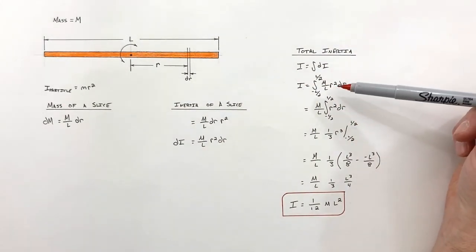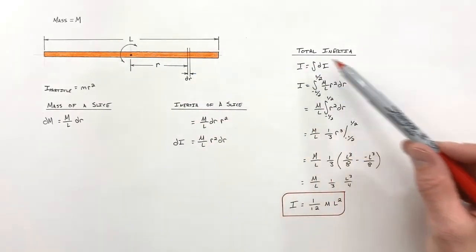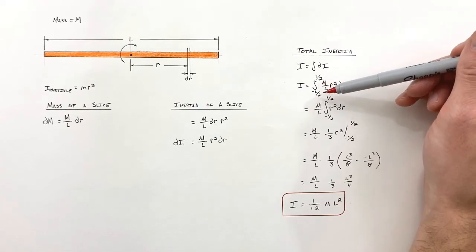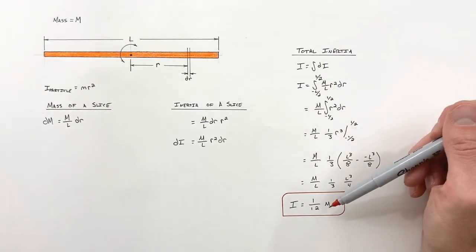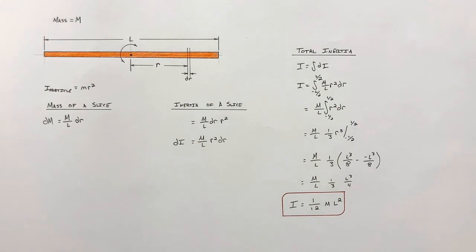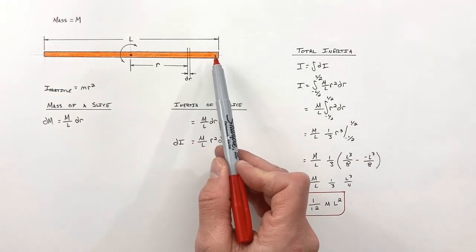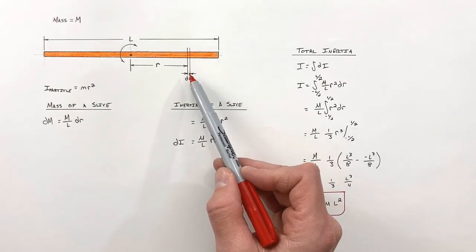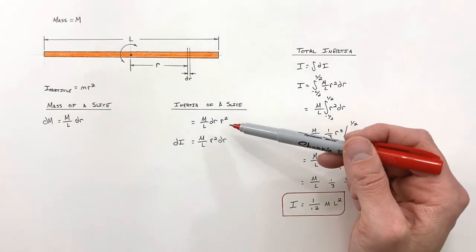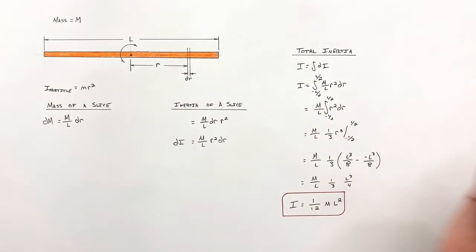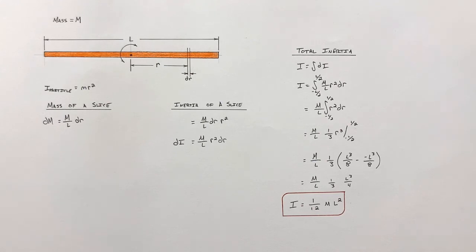We can actually rotate a rod around any point along its long axis — as long as we put in the correct limits of integration, we'll get the correct rotational moment of inertia. What we've done here is taken an infinite distribution of mass, found the inertia at each radius via integration, and found the total inertia. This is the rotational moment of inertia of a rod rotated around its center.